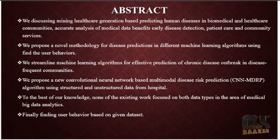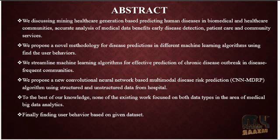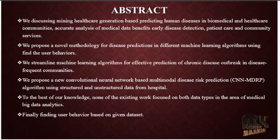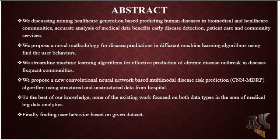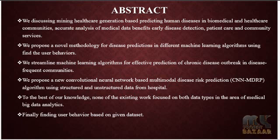We use training and testing data. The training data is classified into three types of classification algorithms: Naïve Bayes algorithm, K-Nearest Neighbor algorithm, and Decision Tree algorithm. Each algorithm is applied on the training dataset and we calculate accuracy, F-measure, precision, and recall. We also propose a new Convolutional Neural Network based Multimodal Disease Risk Prediction (CNN-MDRP) algorithm.